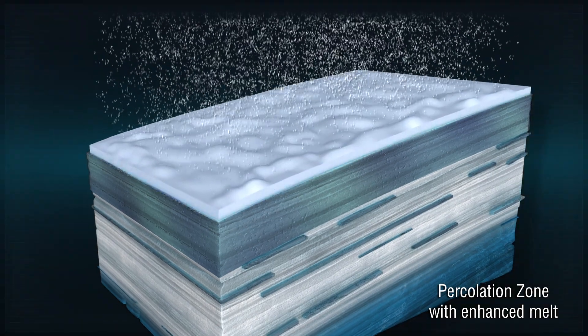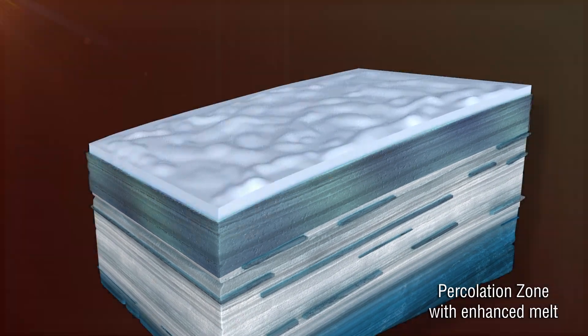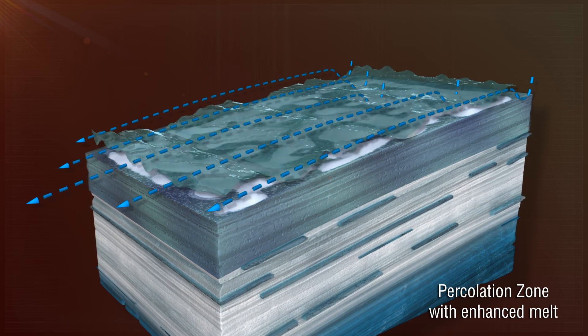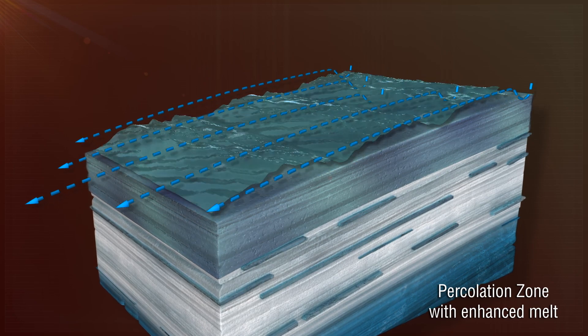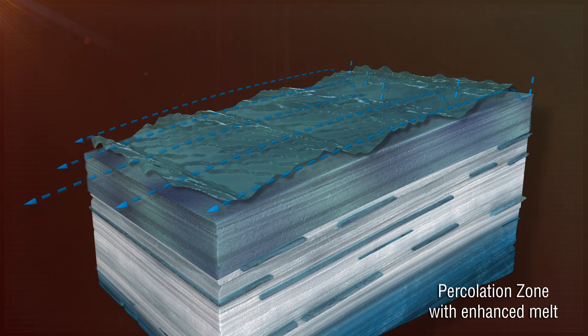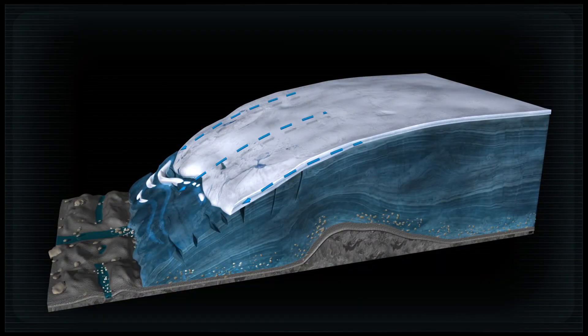When they get thick and continuous enough, you can cause a lid of ice over the sponge. The water begins to run off just like it does in the ablation zone, and this causes ever-increasing areas of Greenland to run off and contribute directly to sea level rise.